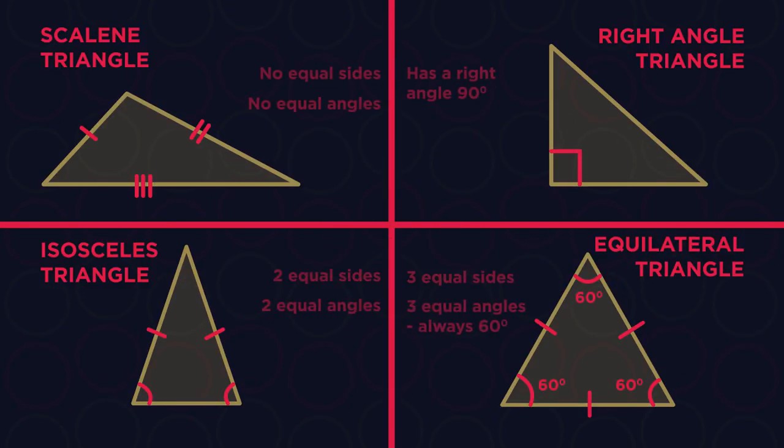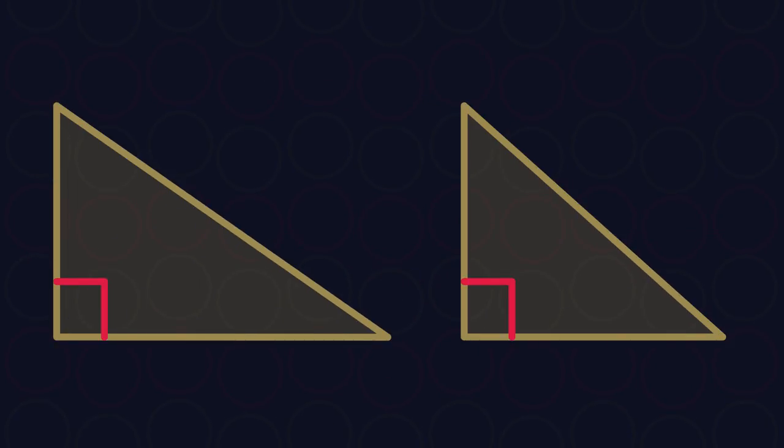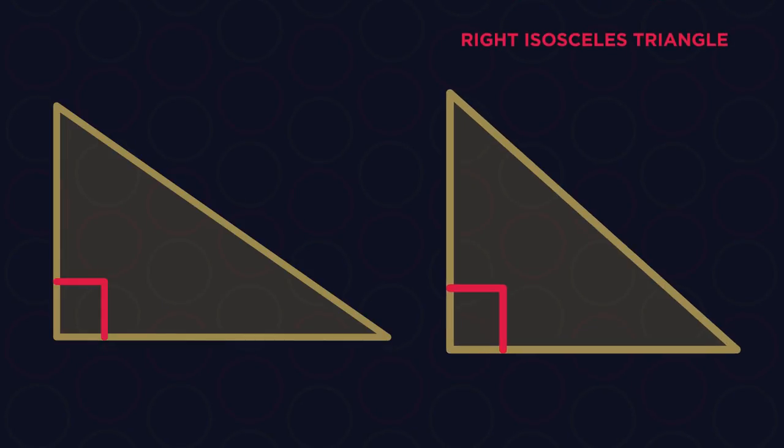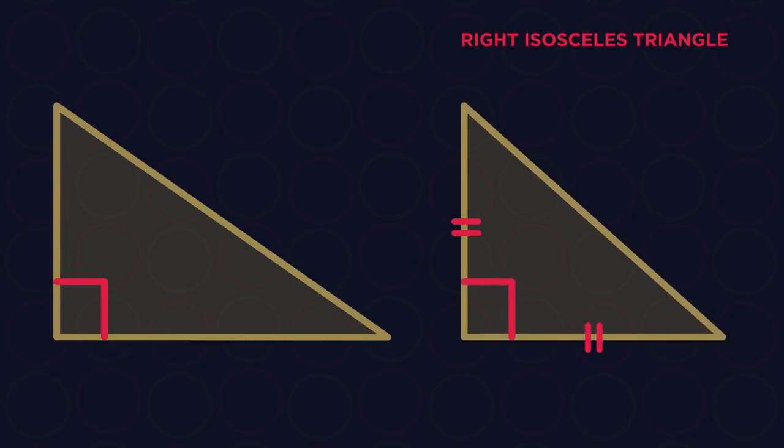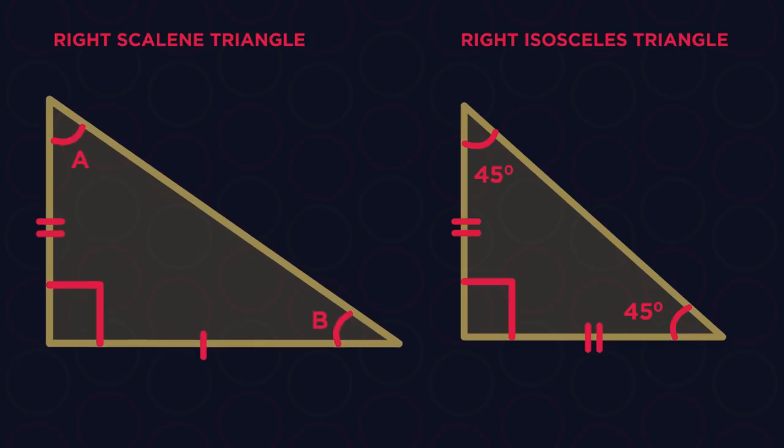Is this what you discovered? Did you realize that a right-angled triangle can actually be an isosceles triangle if it has two equal sides and angles? Or it can be a scalene if everything is different?